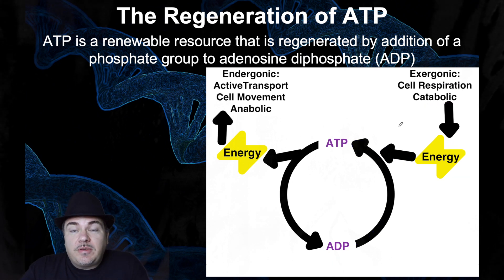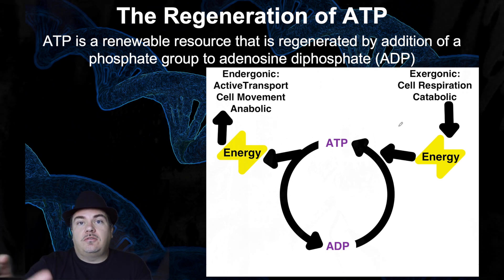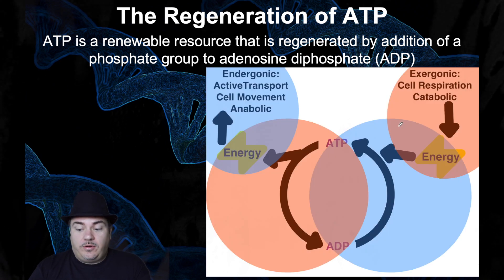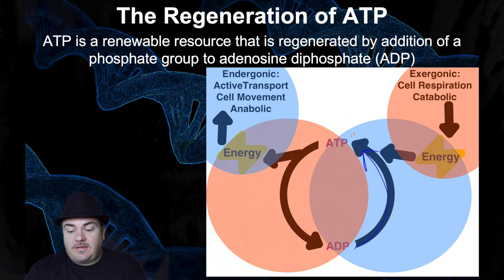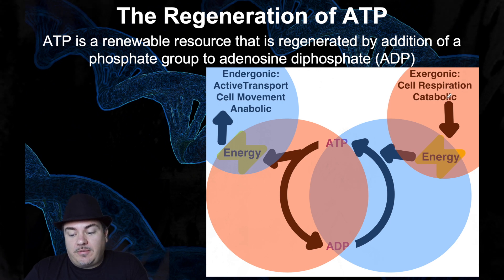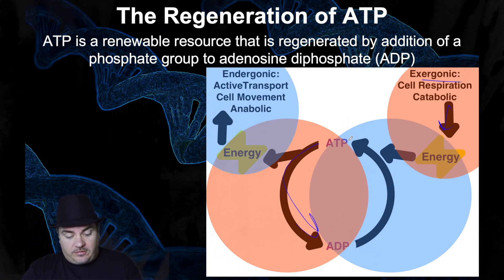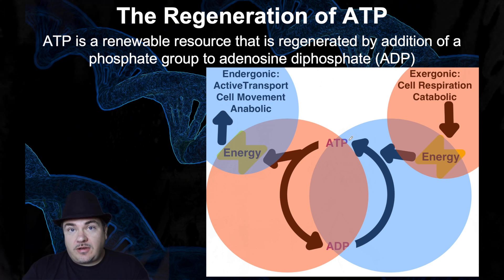So this is ATP — your cell's rechargeable battery, used for energy coupling, where the energy released from an exergonic reaction powers an endergonic reaction. As a cheat sheet: in blue are endergonic reactions — active transport, cell movement, anabolic reactions, and ADP to ATP. In orange are exergonic reactions — cell respiration, catabolic reactions, and ATP to ADP, which releases energy.